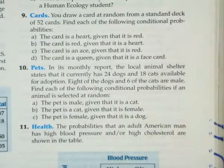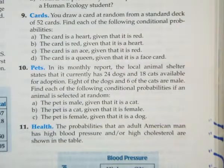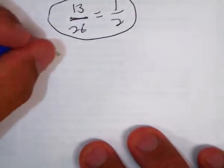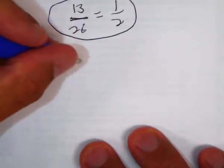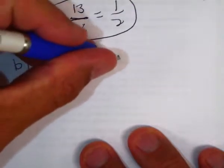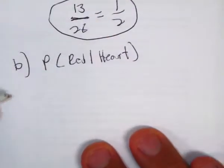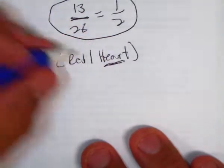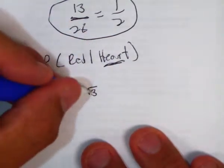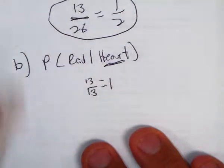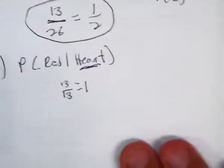Alright, B. The card is red given that it's a heart. So, the probability it's red given that it's a heart. Let's do it the short way first. How many hearts are there in a deck? 13. How many of those 13 cards are red? 13. So that's 100%.